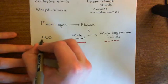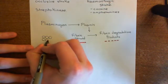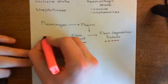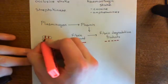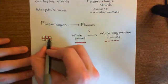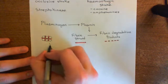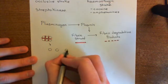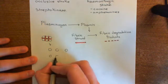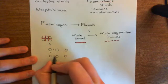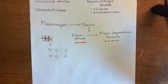So if plasmin starts breaking down the fibrin strands within a thrombus — let's draw a thrombus with the fibrin strands intertwining everything together — if you break apart the fibrin strands, the whole thing is going to break apart. This is a way of breaking thrombus up into pieces, basically disintegrating thrombi.